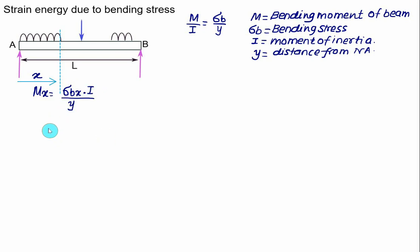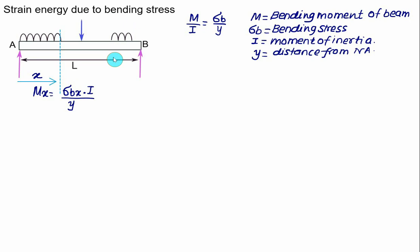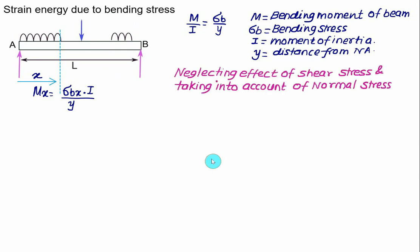Bending moment equals bending stress multiplied by moment of inertia I, divided by Y, where Y is the distance from the neutral axis. We have already developed the strain energy formula: U equals the integral of σ² divided by 2E multiplied by dV. In this discussion, we only consider the effect of bending stress; the effect of shear stress is neglected.